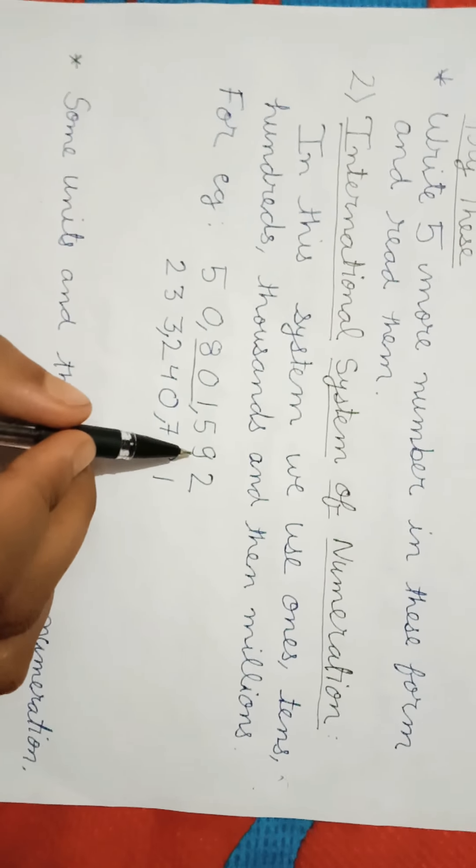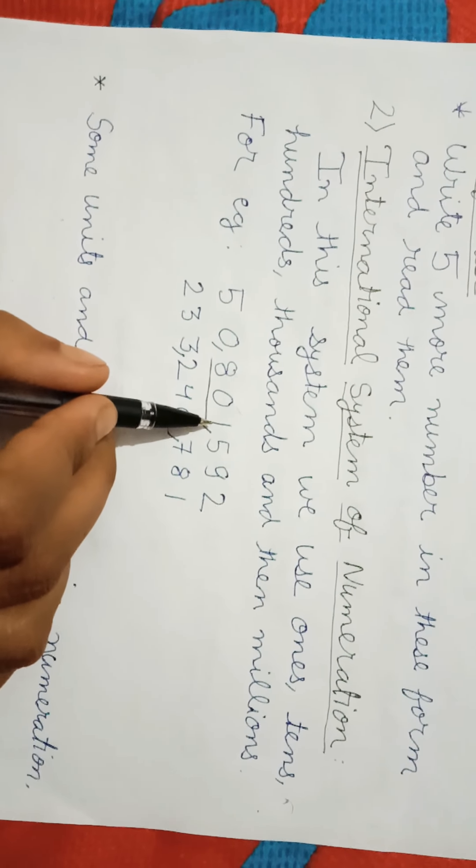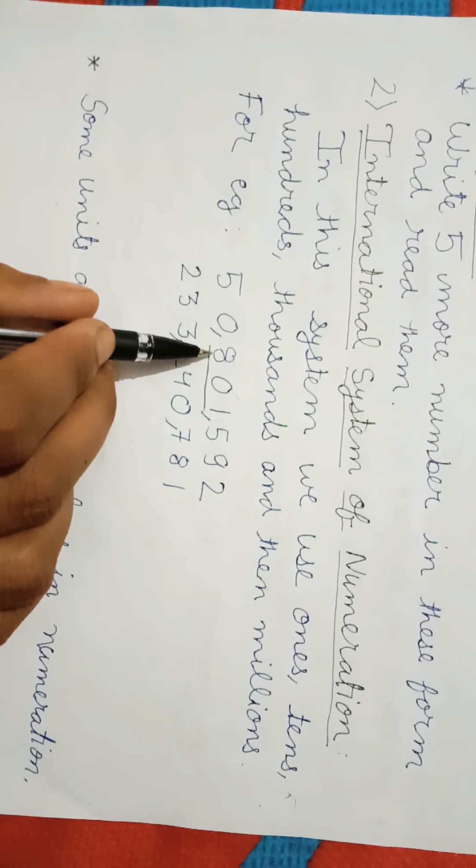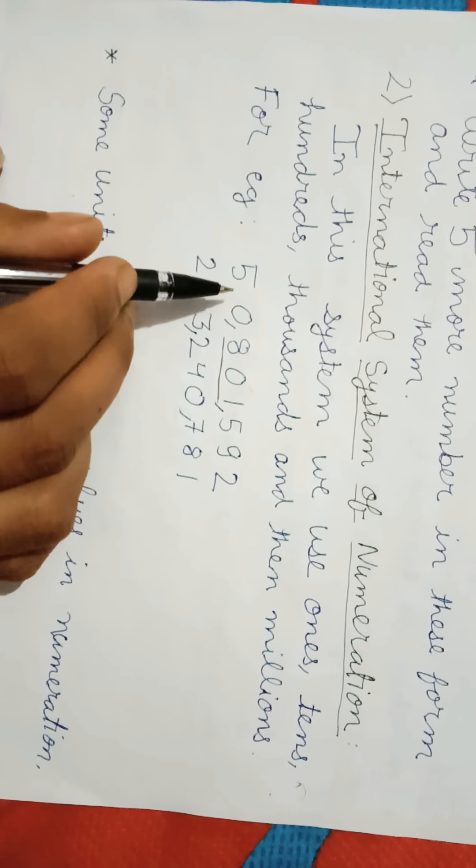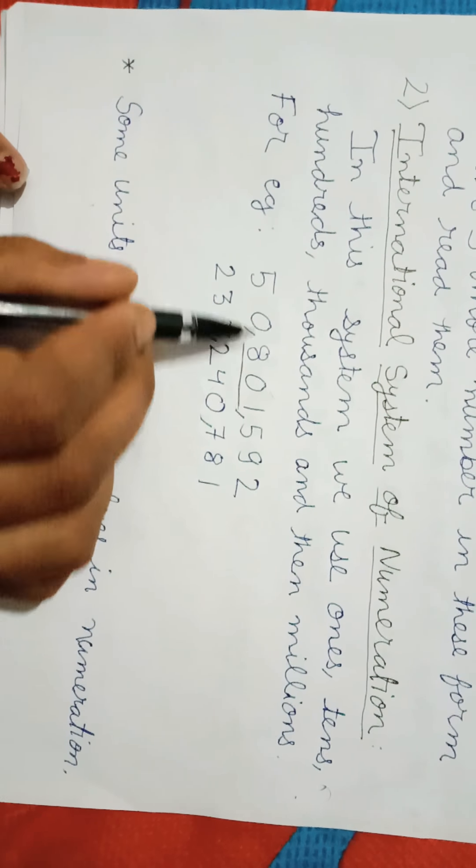It reads as ones, tens, hundreds, thousands, hundred thousands, millions, ten millions. It is 50 million, 801 thousand, 592.